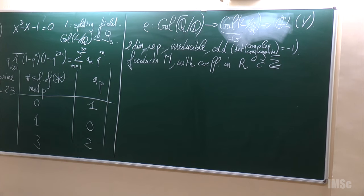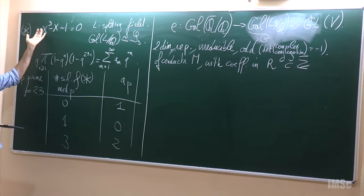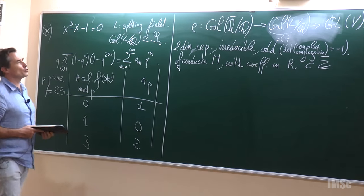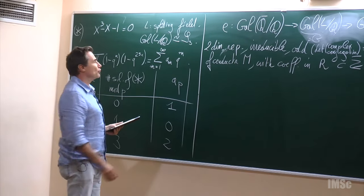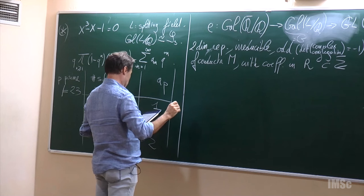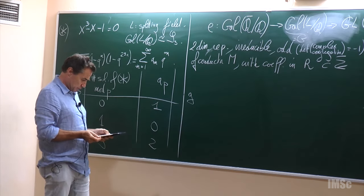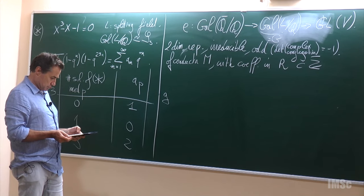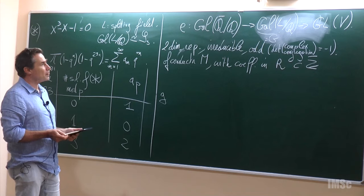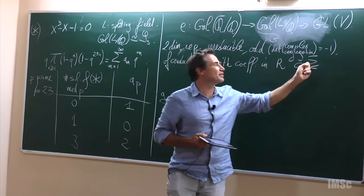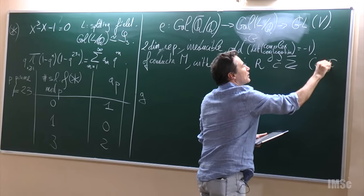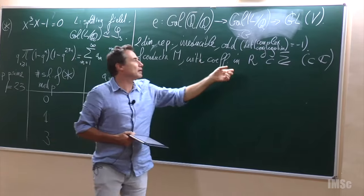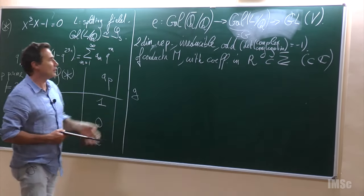The Galois representation has a conductor. It also has a ring of coefficients, which is going to be a subring of the ring of algebraic integers. In particular, when you consider this object, you can find a representation of S3 into a two-dimensional representation, and you get an object of this type.